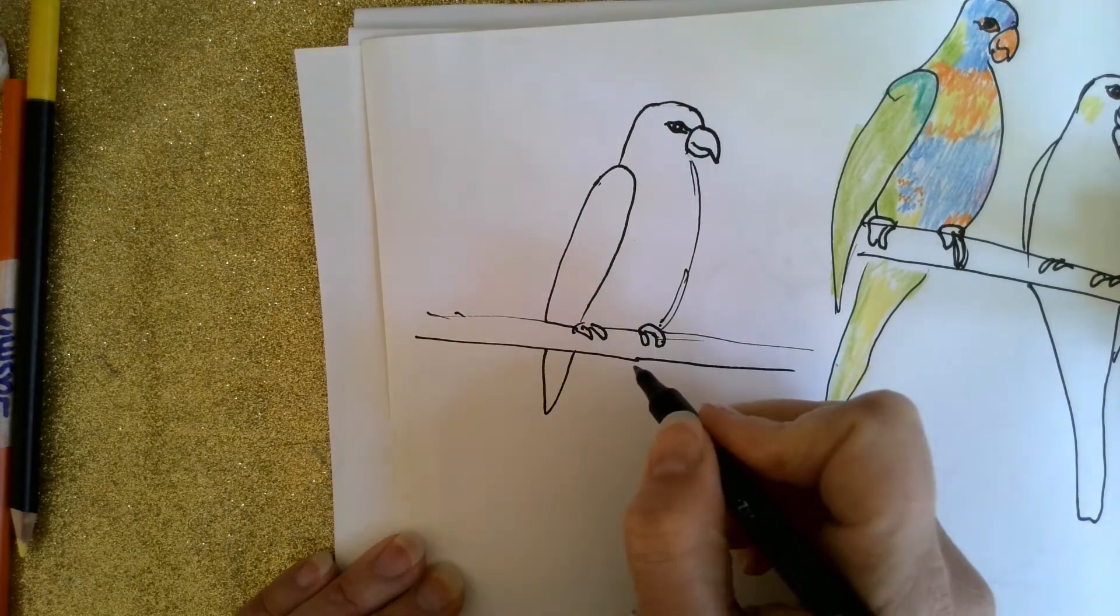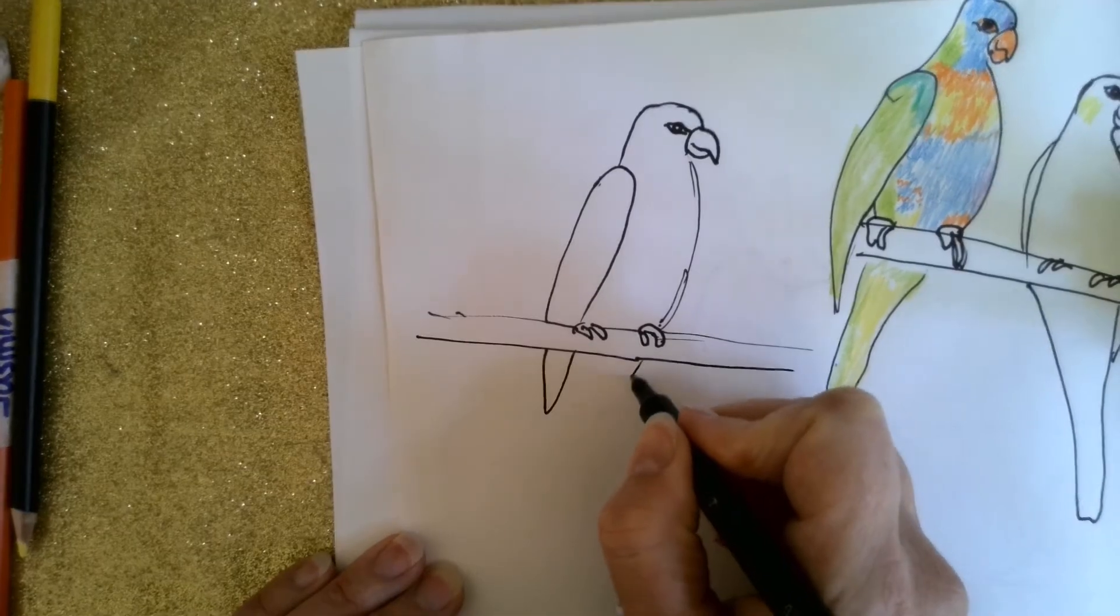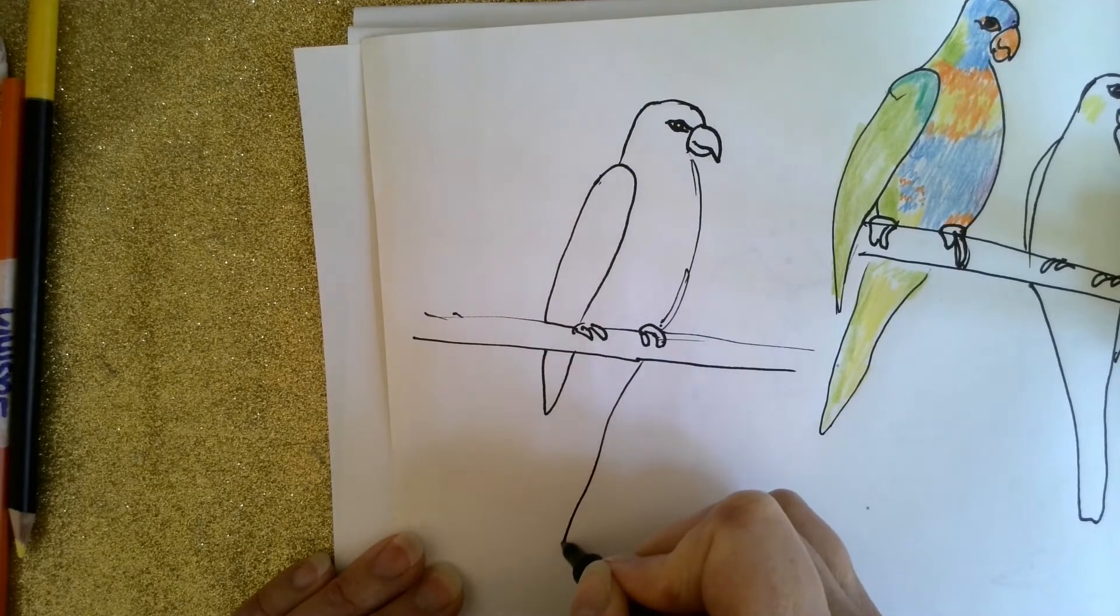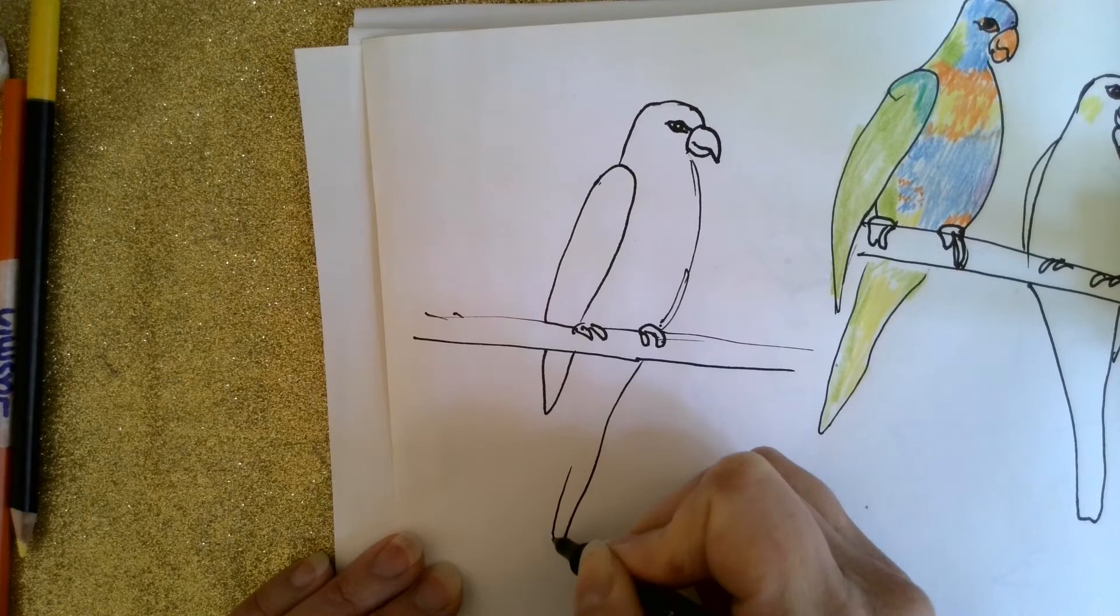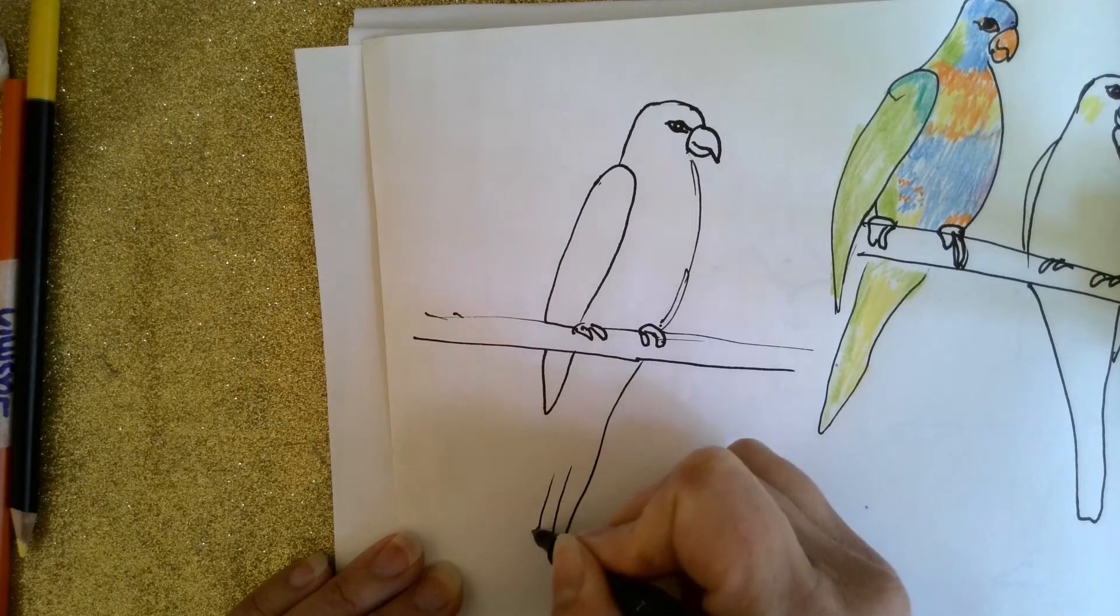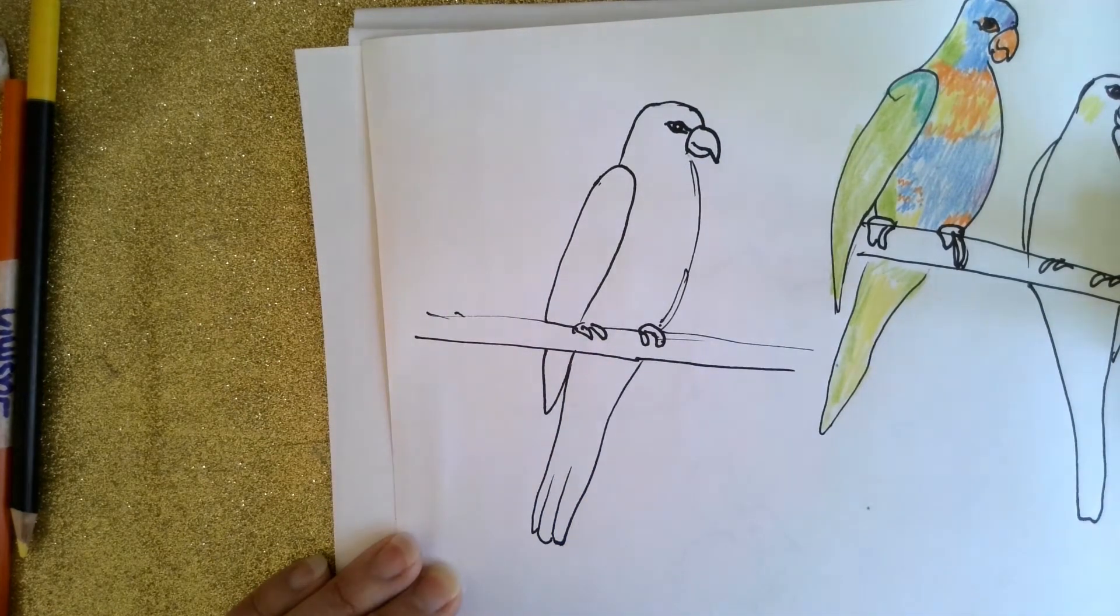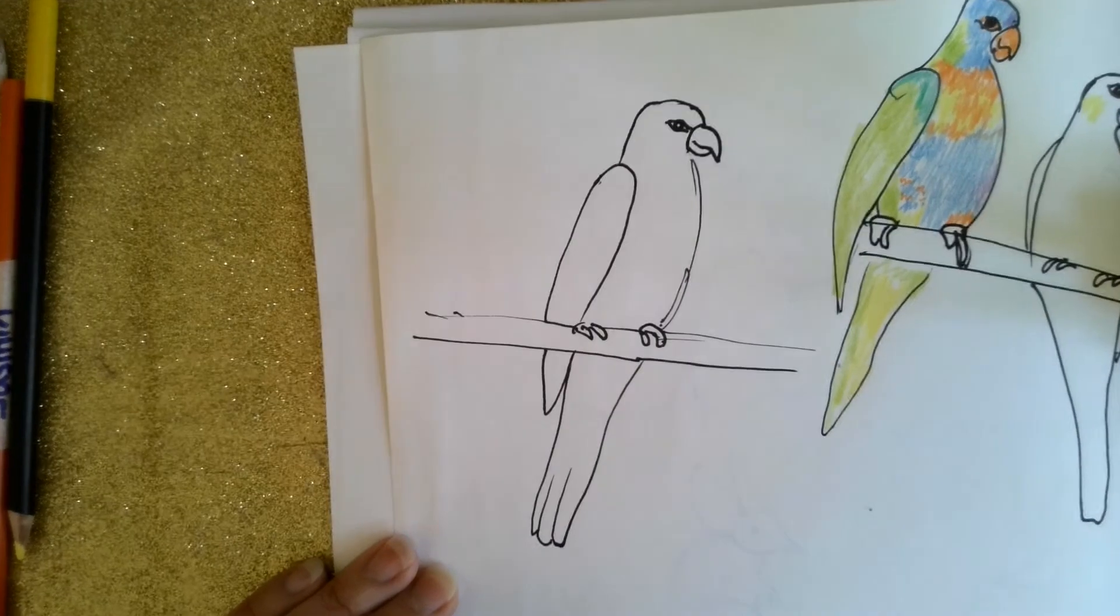Point like that. And then from here we're going to come down and do those long tail feathers up like that. And there's your basic shape.